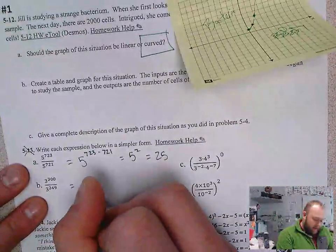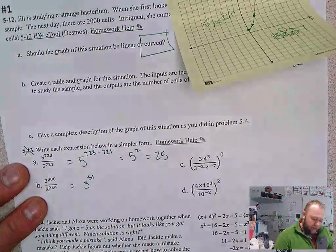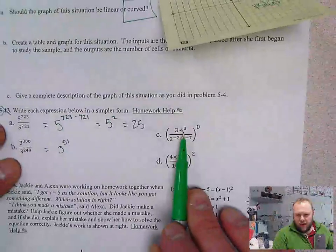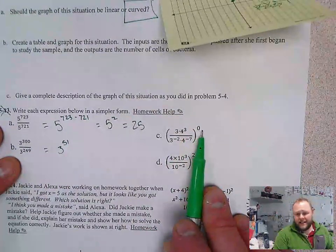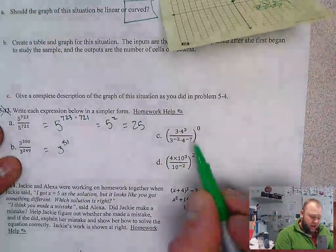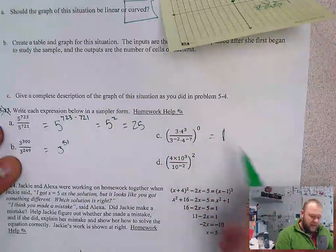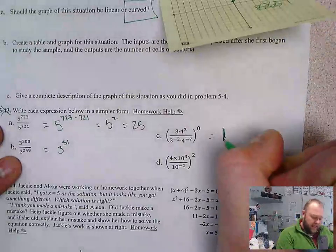B, same thing. 3 to the 51st power. This one, I see that it is to the zero power. Remember, anything to the zero power is 1. So everything inside is equivalent to 1 when we put it to the zero power.